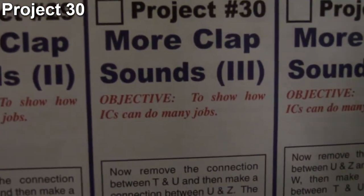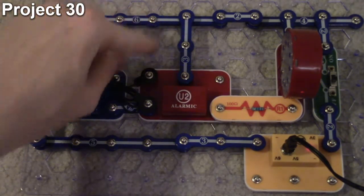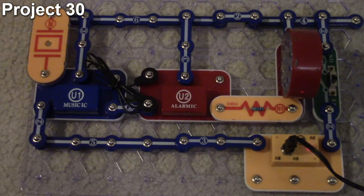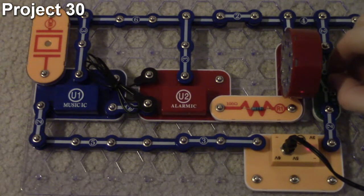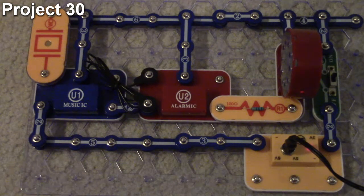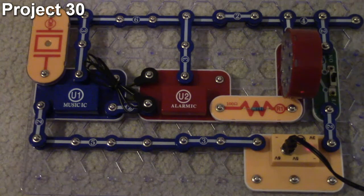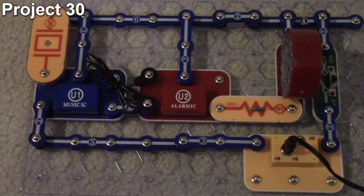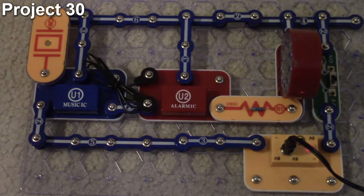That's project 30, and that is more clap sounds 3. The objective is to change the sounds around, and now we moved our jumper cable and connected these two ports together, so now we got that on music IC. It says it's supposed to sound like an ambulance. I'm not sure if that really qualifies as an ambulance based on the way, but that's how they say project 30 is supposed to work according to their diagram. So that's project 30, let's move on to project 31.